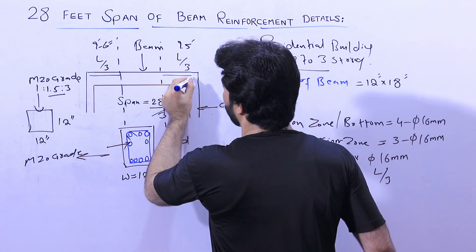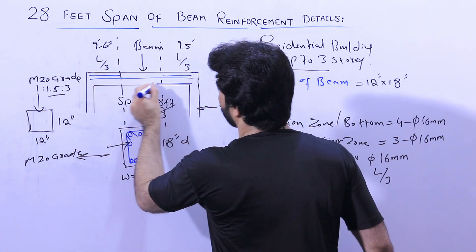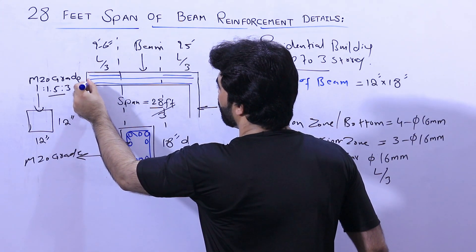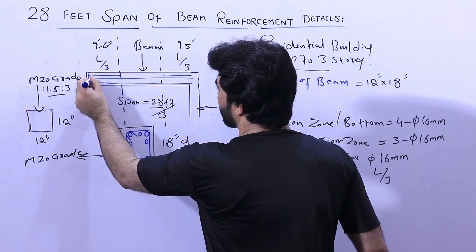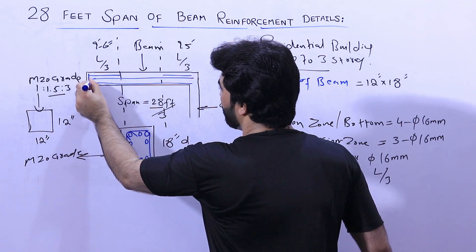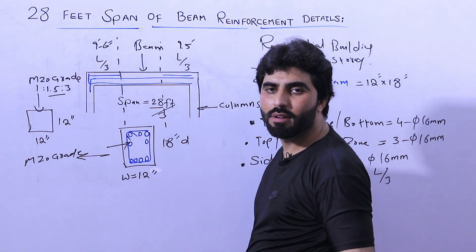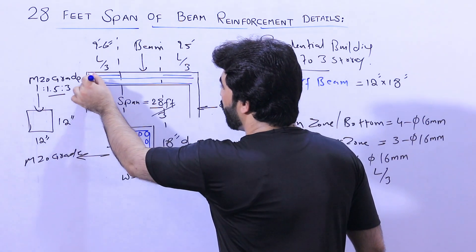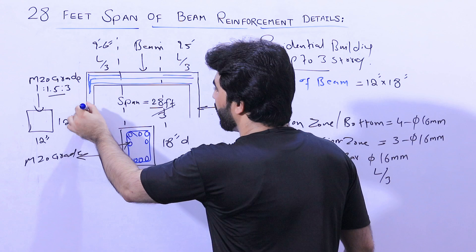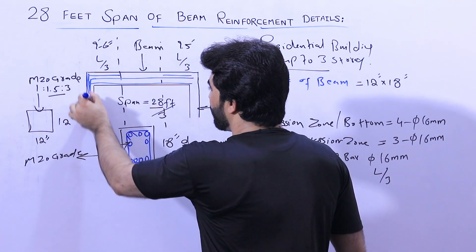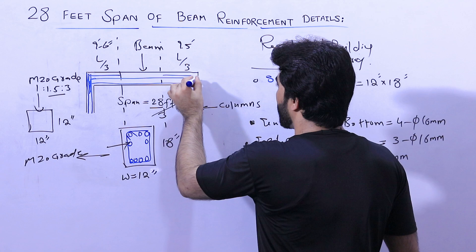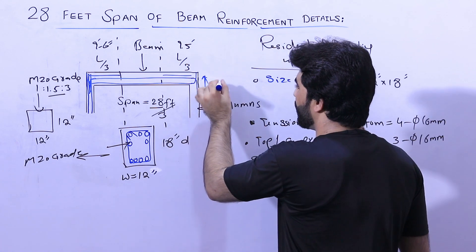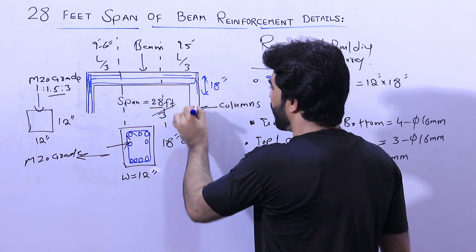These are the longitudinal top bars, and these are the bottom bars which are in the tension zone. Tension zone steel reinforcement should be bent upward, and the top portion steel reinforcement should be bent downward — this is called development length, which should not be less than 18 inches. These development lengths should be connected or overlapped with the longitudinal bars of the column.